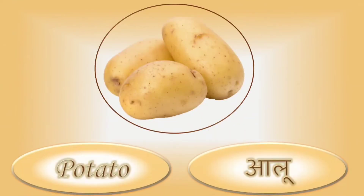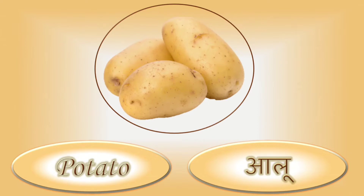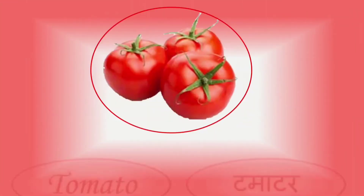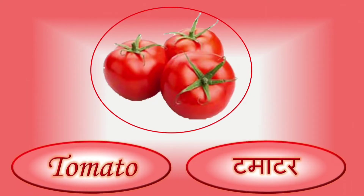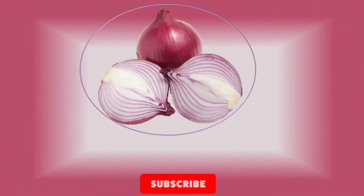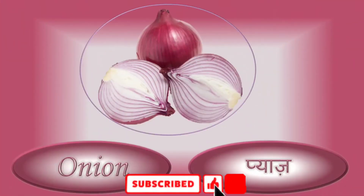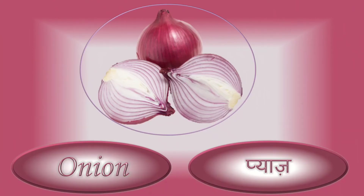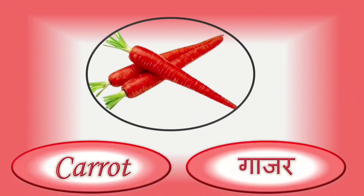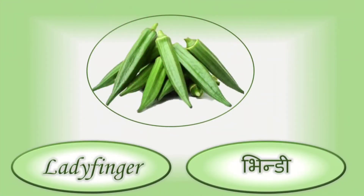What is this? This is potato. Potato means aloo. This is tomato. Tomato means tamatar. This is onion. Onion means pyaz. Carrot — carrot means gajar. Ladyfinger — ladyfinger means bhindi.